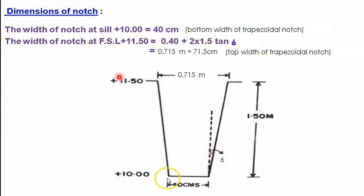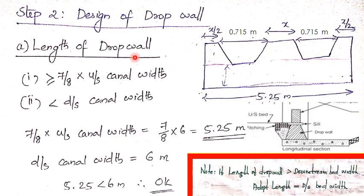The reduced level of the top of the notch equals the full supply level, given as 11.5 meters. The sill level — the bottom of the trapezoidal notch — equals the upstream bed level, given as 10 meters. Step 2 continues with the design of the drop wall. The drop wall is the trapezoidal hatched portion shown in the figure; we need to find its top width, bottom width, and height.